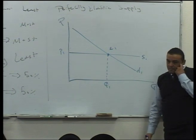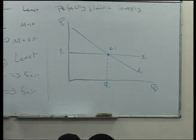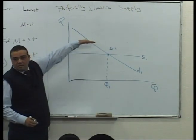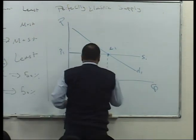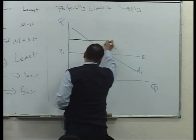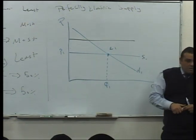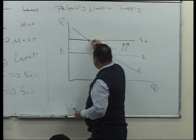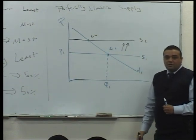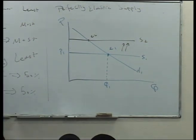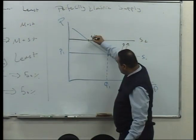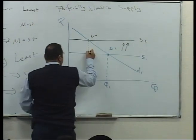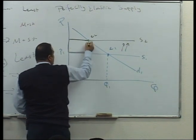Now the government decided to impose a tax. This affects supply, so the supply curve shifts left. We are talking about taxes on the suppliers or sellers. We have a new equilibrium point E2. To determine the government tax revenue or the tax burden, we look at the area from E2 to S1. This rectangle represents the total tax burden.